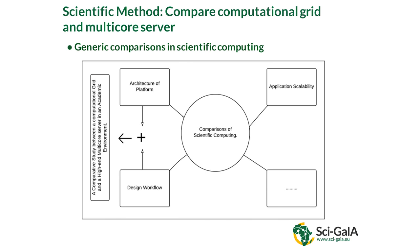Jocelyn spoke about application scalability, which is one kind of comparison. You can also compare architecture or design workflow. But combining architecture comparison and design workflow comparison is very powerful — you put those two together to see what you get. In industry they can acquire powerful specialized processing machines and they do, but in the academic environment we keep getting left behind. That's what I decided to investigate.